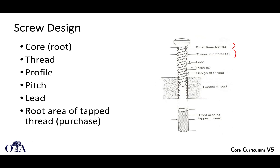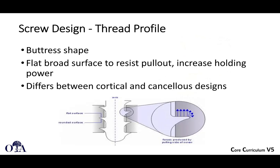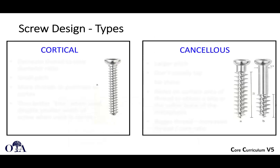The thread profile is typically a buttress shape — flat and broad. It's shaped this way because you don't want the screw to pull out; it inserts easily but resists pull-out. You can see how the screw design helps resist pull-out and increases holding power.